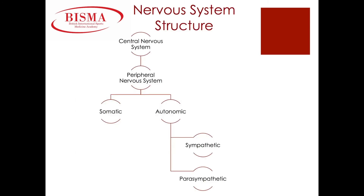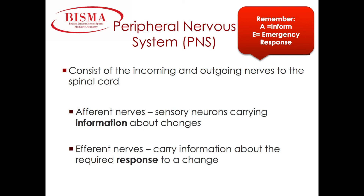We have the central nervous system consisting of our brain and spinal cord, and the peripheral nervous system consists of the nerves stemming from the spinal cord. The peripheral nervous system is divided into somatic and autonomic sections. The somatic is under our conscious control, and the autonomic is under our unconscious control. The autonomic is then divided into the sympathetic and parasympathetic nervous systems — the sympathetic is responsible for speeding up bodily processes, and the parasympathetic brings everything back to homeostasis. The peripheral nervous system consists of afferent nerves, which are sensory neurons carrying information about changes in our body environment, and efferent nerves, which carry information about the required response to a change.